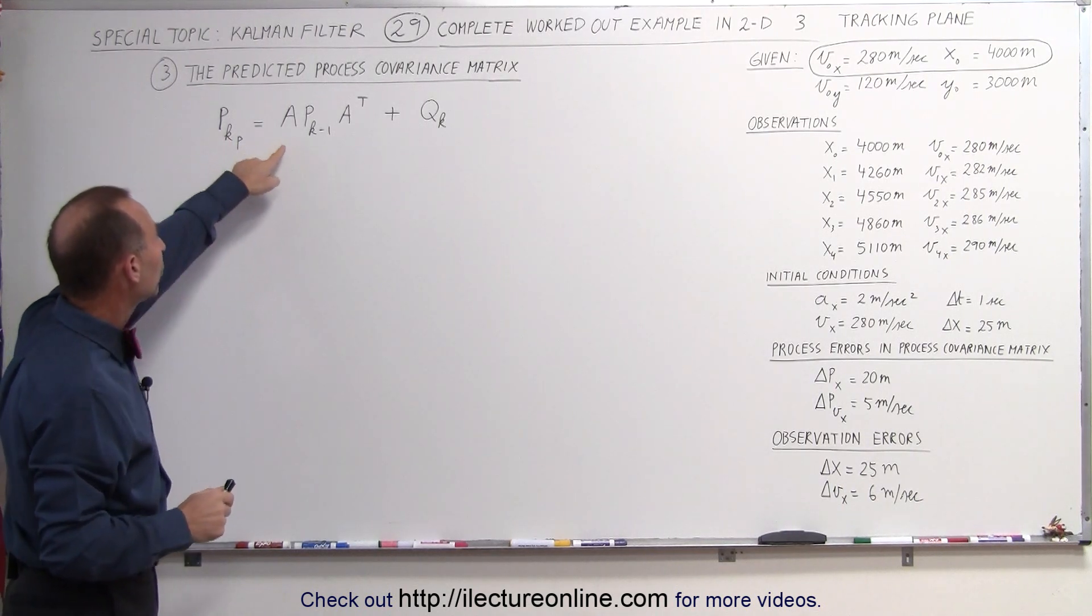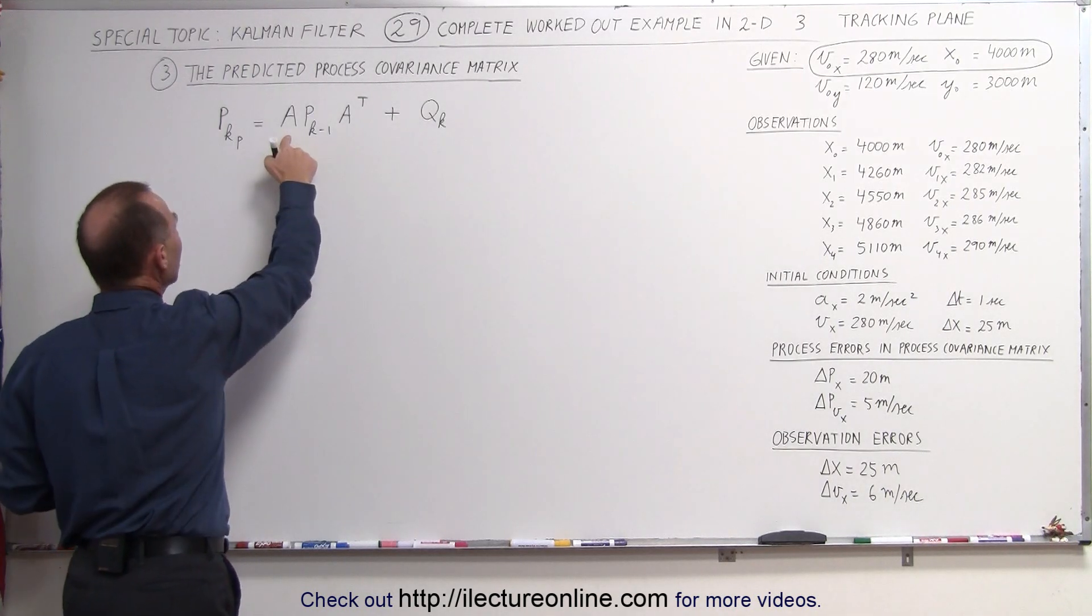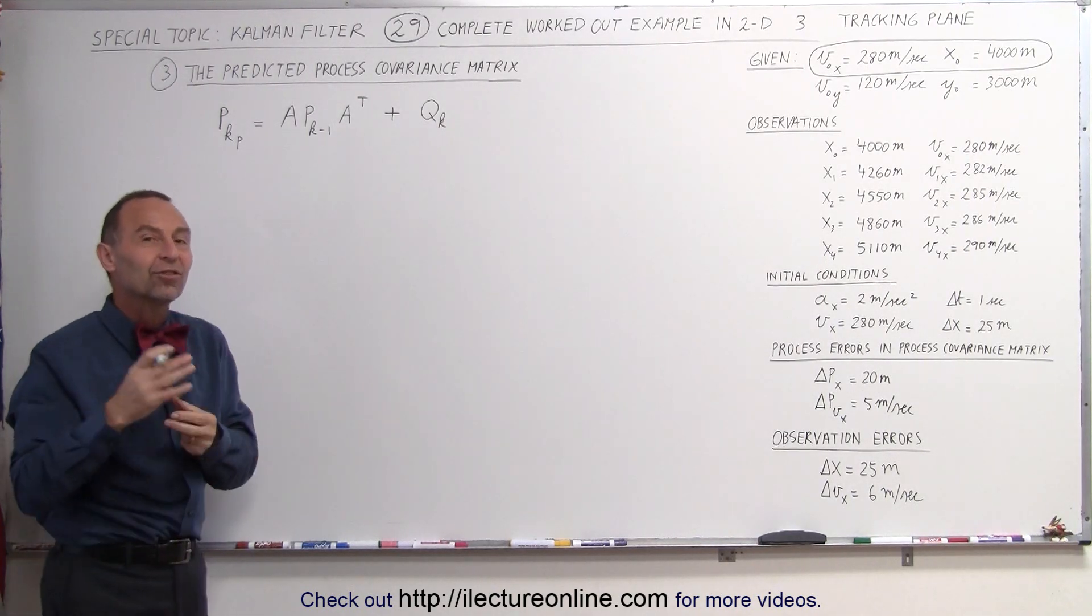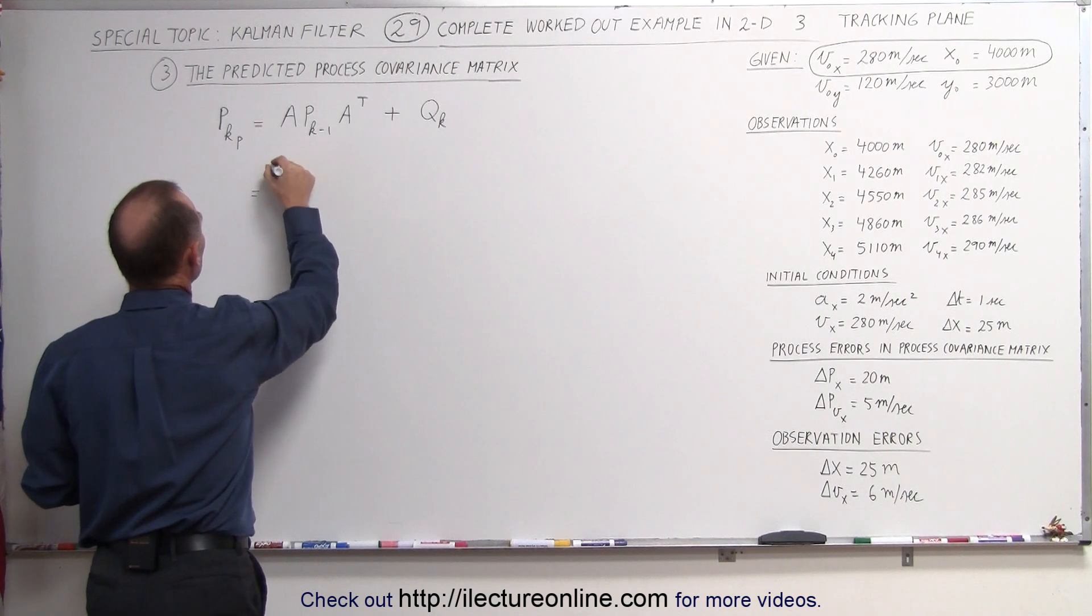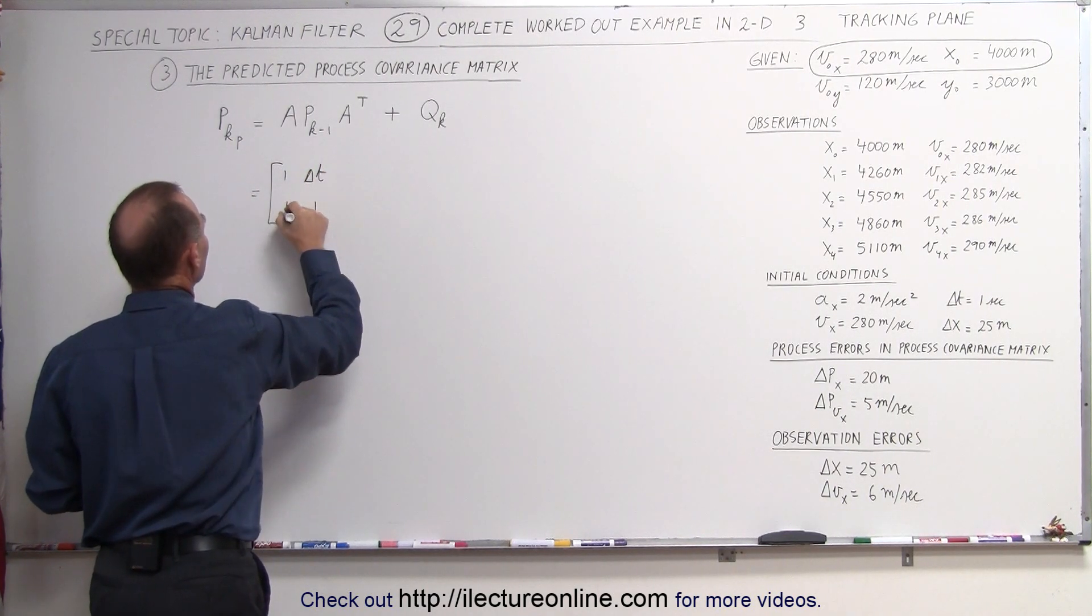To do that, this is the equation we're going to use. This is the third step in our process. Now the A matrix is the same as the A matrix for the state matrix. This is equal to, we have 1's across the diagonal, and delta T over here, and this will be a 0.